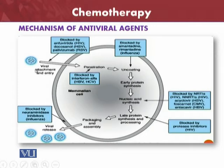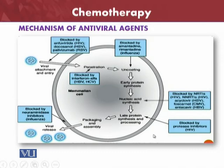First, the entry of the virus inside the body — virus entry can be blocked for HIV, HSV, or RSV before it enters the mammalian cell. Penetration can then be blocked by neuraminidase inhibitors, for example in influenza. After penetration, uncoating can be blocked by antiviral agents. Then early protein synthesis and nucleic acid synthesis can also be blocked with antiviral drugs, as well as late protein synthesis and processing. There are different antiviral agents capable of blocking the viral life cycle at different stages.